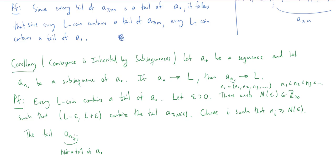However, it is contained in the tail A sub n-i as a tail of A. We already know that it's contained in this tail A-greater-than-or-equal-to-N-of-epsilon, which is contained in this L-coin of radius epsilon. So this is contained in the L-coin of radius epsilon. We needed to show that every L-coin contains a tail of A sub n, and that's exactly what we've done.